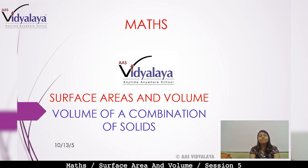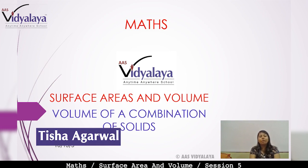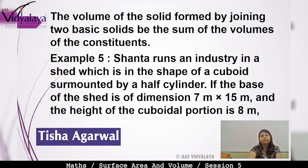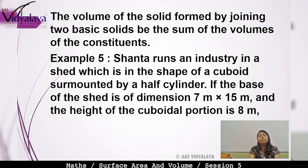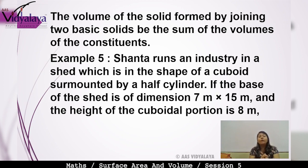Hello students! I am Surface Areas and Volumes — Volume of a Combination of Solids. The volume of the solid formed by joining two basic solids is the sum of the volumes of the constituents. So when we join two solids together, the new solid formed will have a volume equal to the sum of the individual volumes.